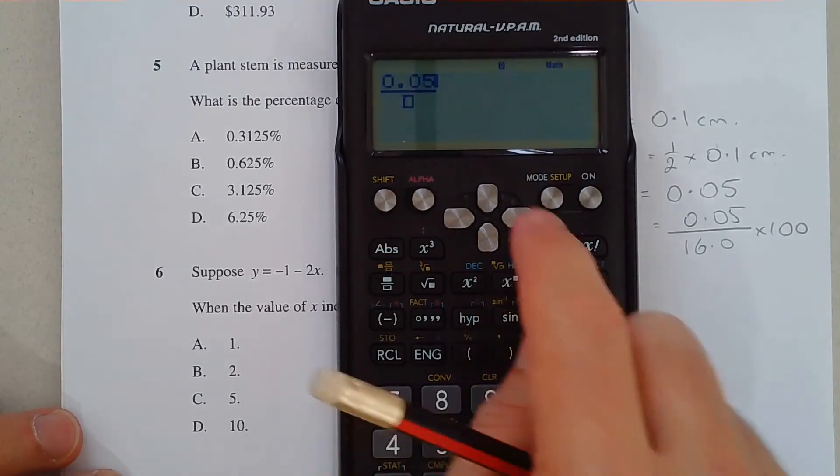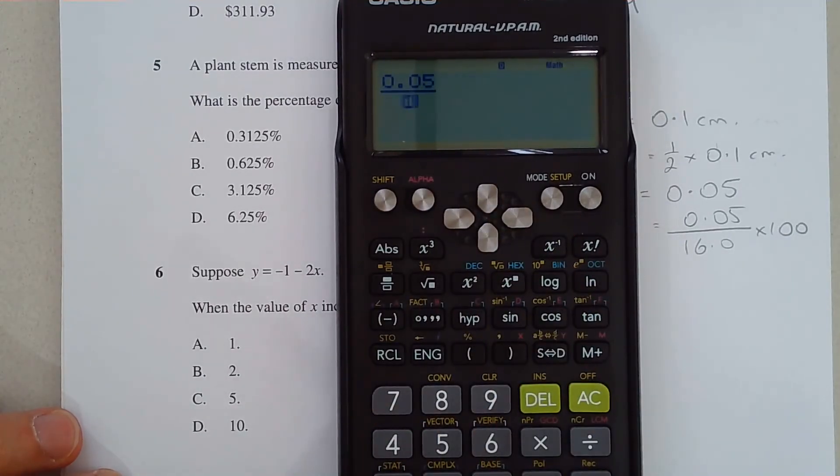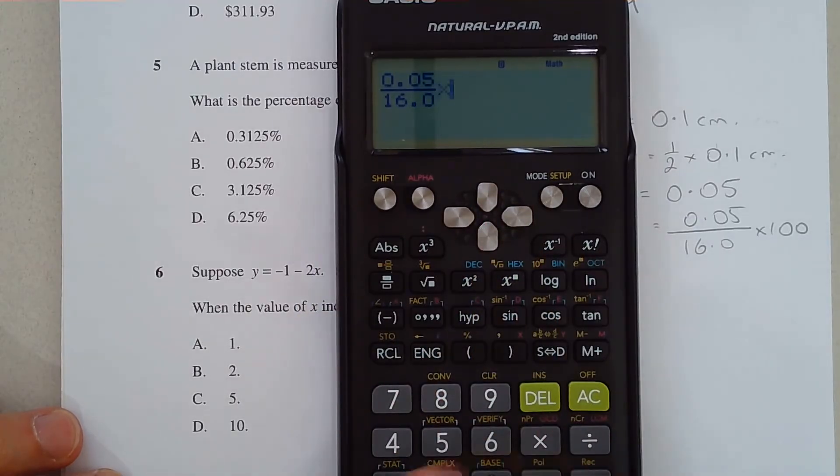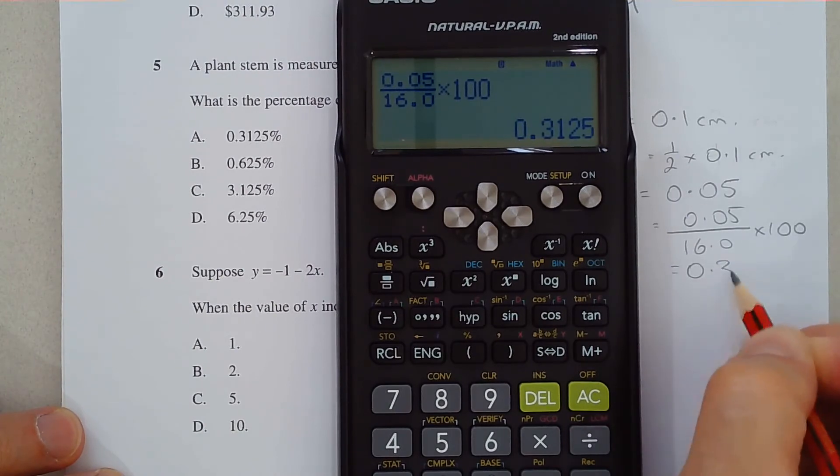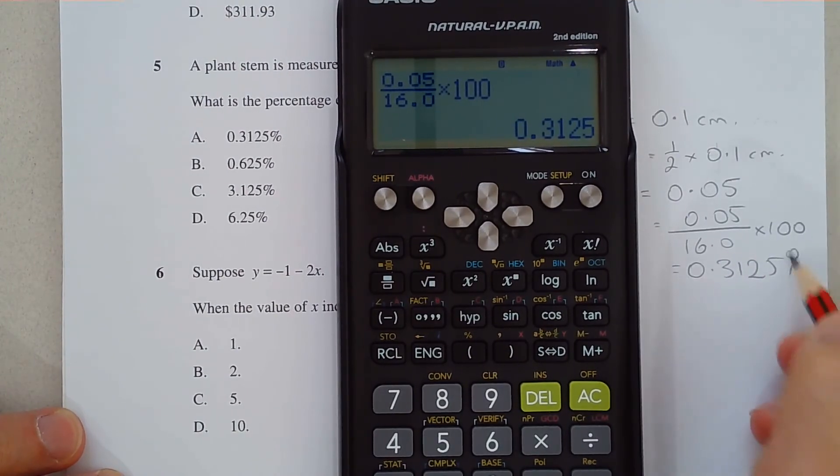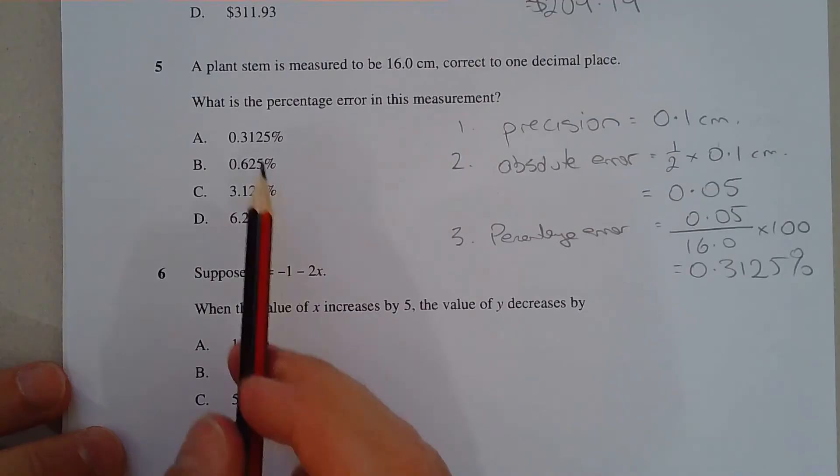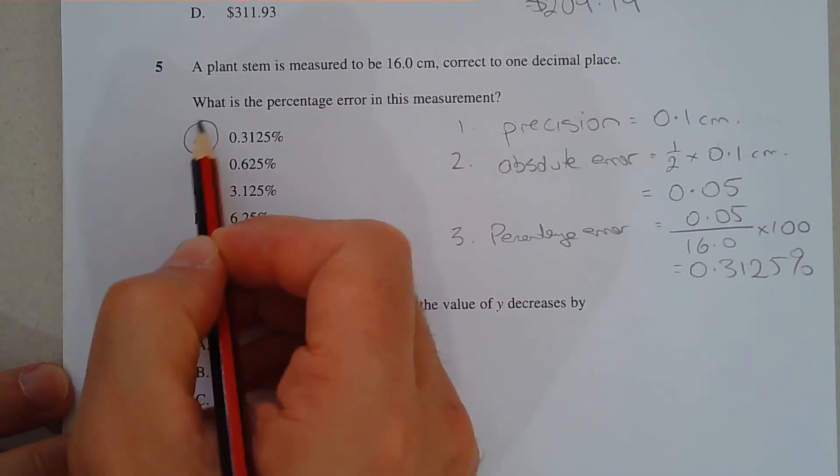Okay, 0.05 over 16.0. Multiply that by 100 to turn it into a percentage. And we've got 0.3125%. So 0.3125, option A.